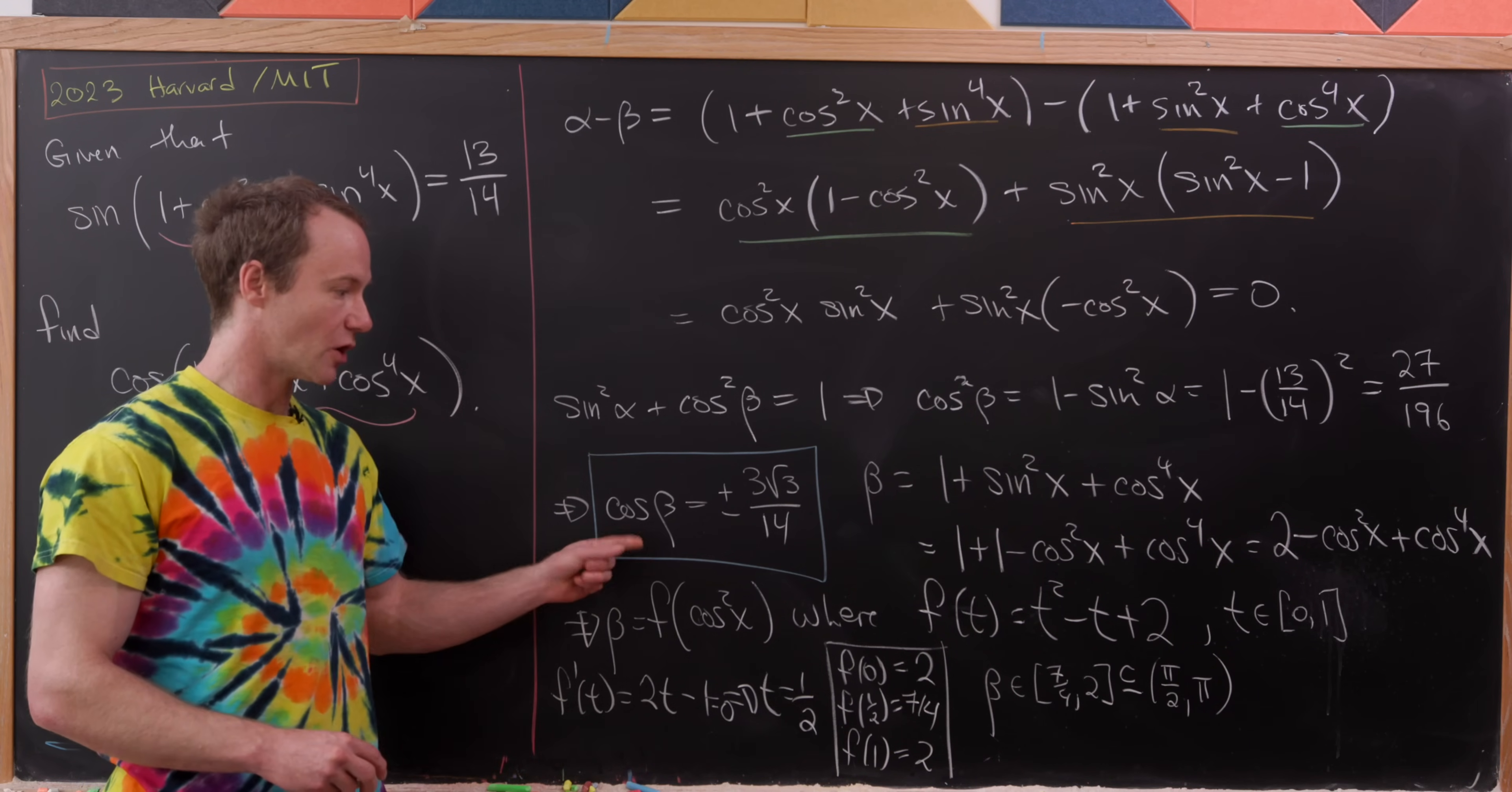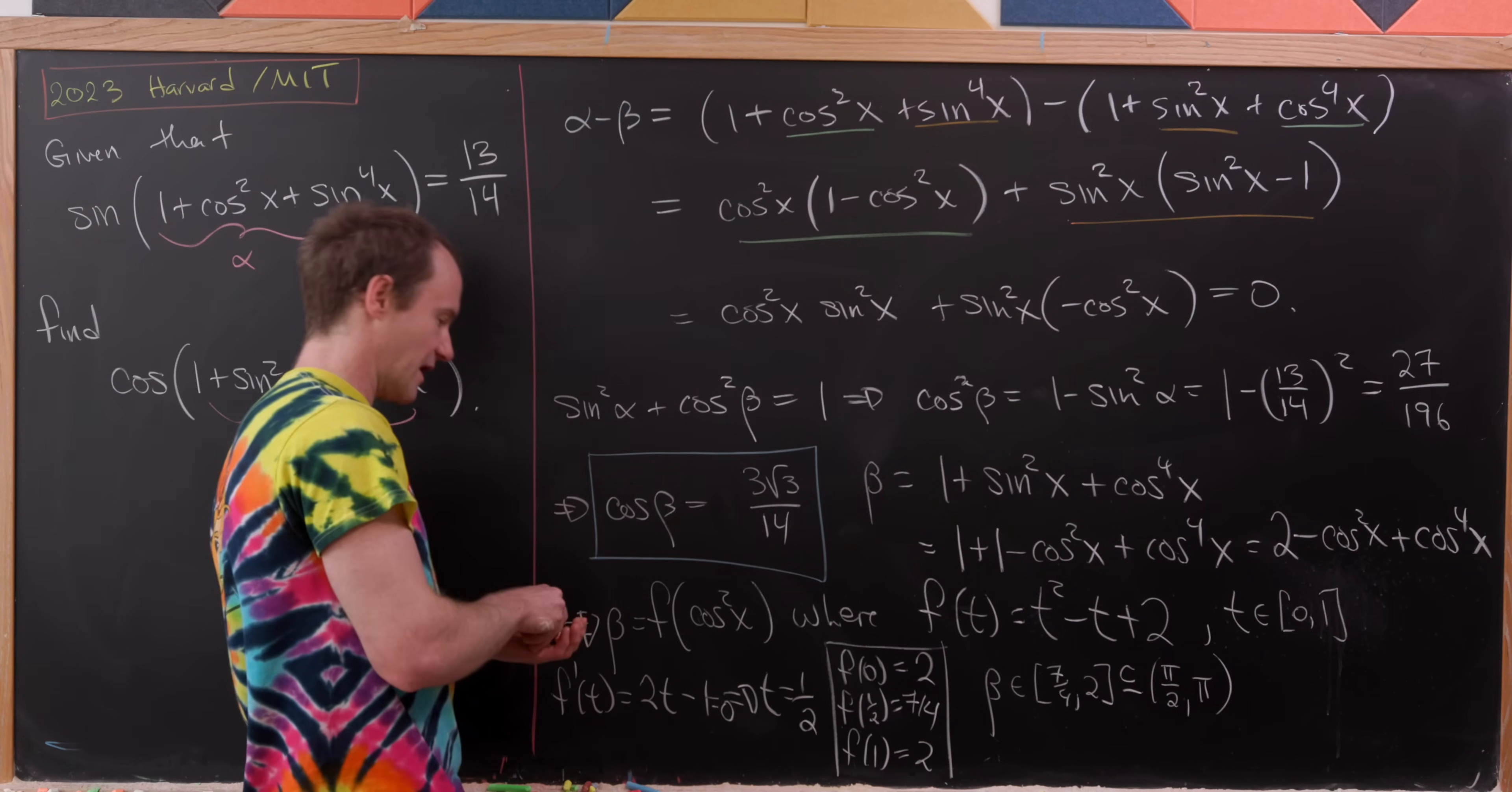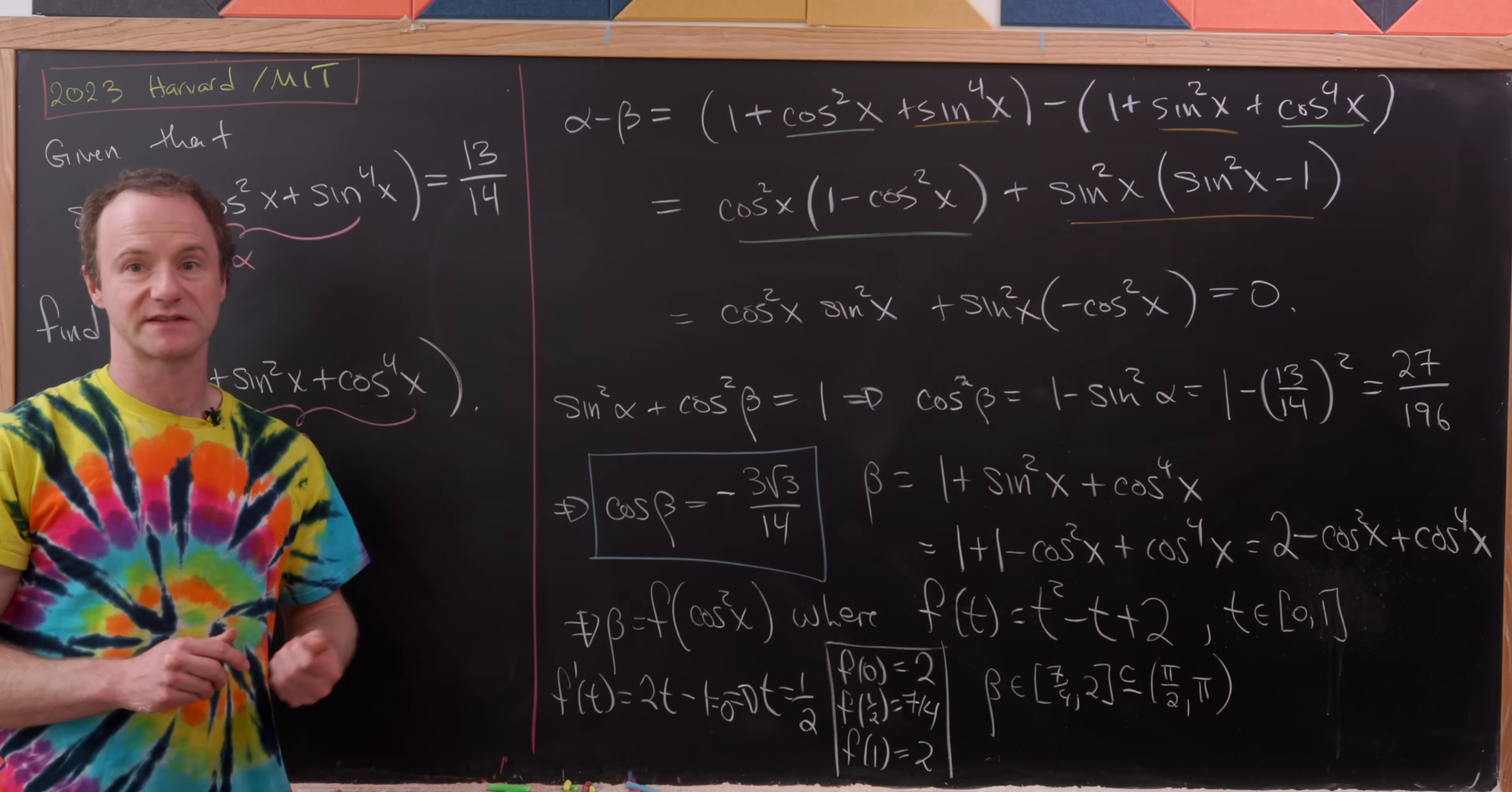And since we're looking for the cosine of beta, we know that we must have a value of negative 3√3/14. And that's a good place to stop.